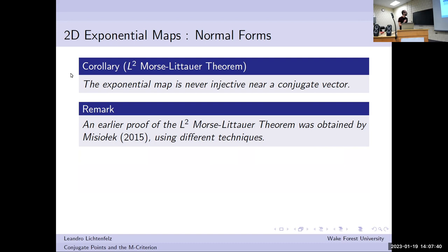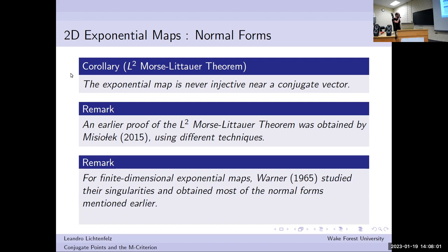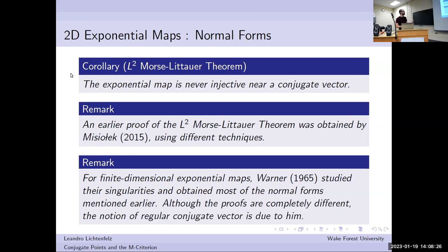There was an earlier proof of just this corollary — the L2 Morse-Littauer theorem — by Misiolek in 2015 using different techniques, a direct argument for the L2 Morse-Littauer. Another important remark: if you go to finite-dimensional Riemannian manifolds, this was actually studied by Warner way back in 1965. He studied singularities of finite-dimensional exponential maps and obtained most, but not quite all, of the normal forms I mentioned earlier — I believe that was his thesis. Although the proofs are different, the notion of regular conjugate vector is actually due to Warner, and my own work is heavily inspired by that.